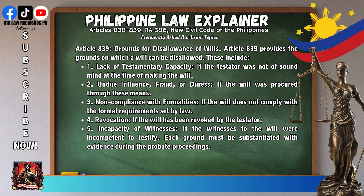The fifth ground is incapacity of witnesses — if the witnesses to the will were incompetent to testify. Each ground must be substantiated with evidence during the probate proceedings.